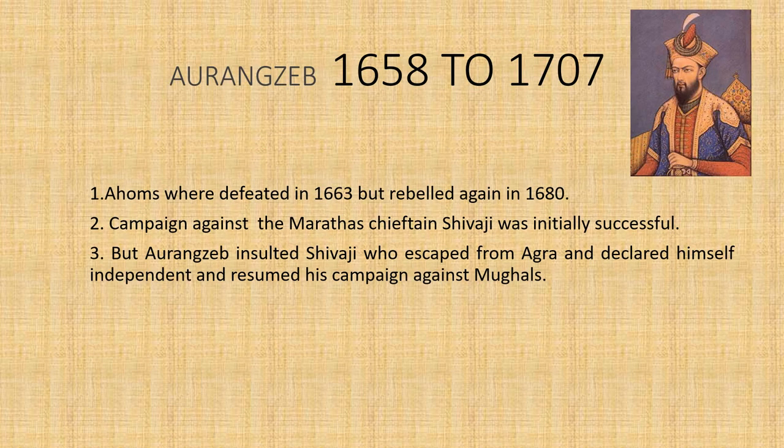The next ruler is Aurangzeb, who ruled from 1658 to 1707. The Ahoms were defeated in 1663 but they rebelled again in 1680. Campaigns against the Maratha chief Shivaji were initially successful, but Aurangzeb insulted Shivaji, who escaped from Agra. Shivaji then declared himself independent and continued his campaign against the Mughals.